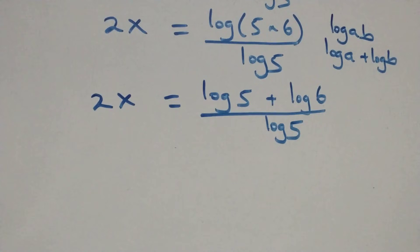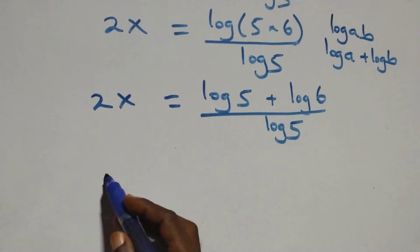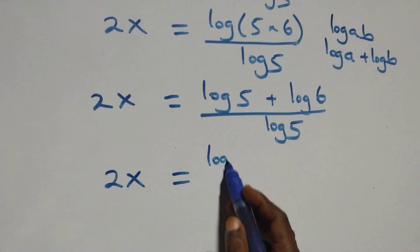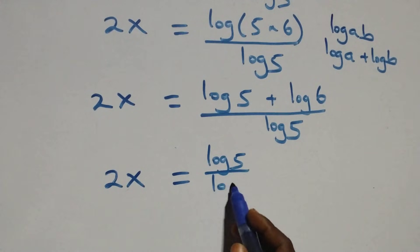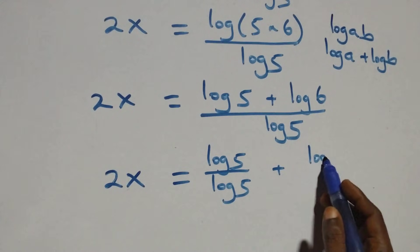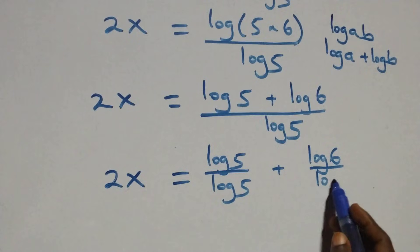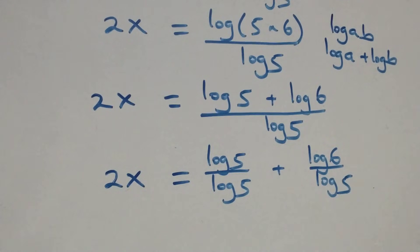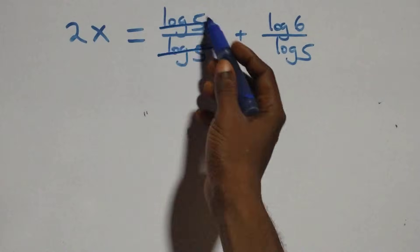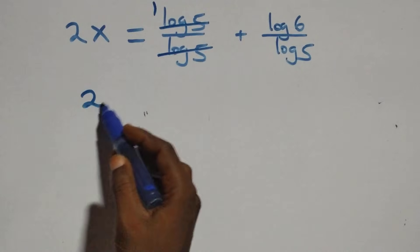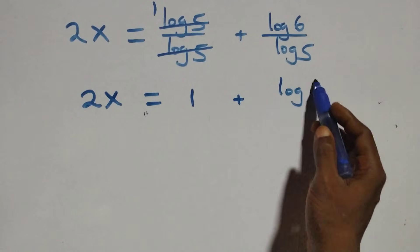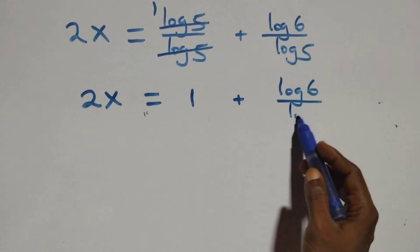Then we separate this into two fractions: 2x equals log 5 over log 5 plus log 6 over log 5. Log 5 over log 5 cancels to 1, so 2x equals 1 plus log 6 over log 5.